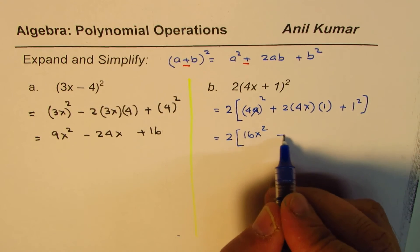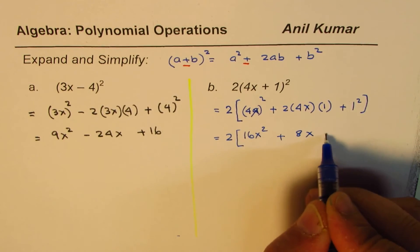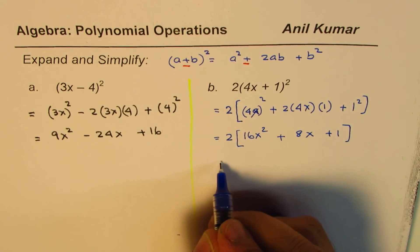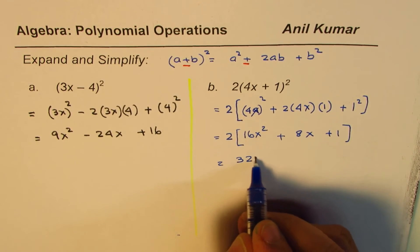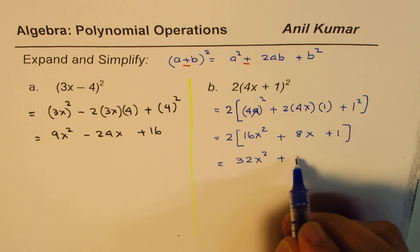Plus 8x plus 1. And now you can expand by distributive property: 2 times 16 is 32x² plus 16x plus 2. Right, so that is how you're going to solve such questions.